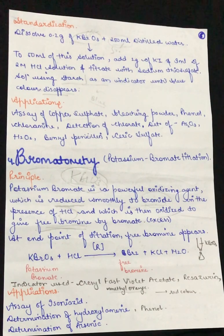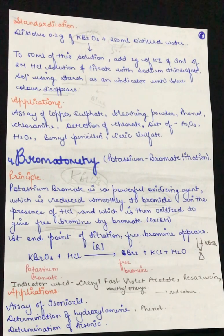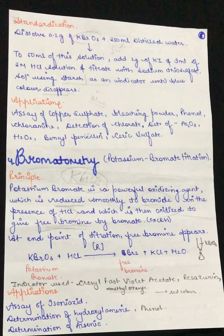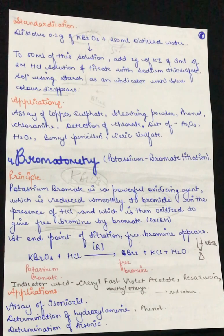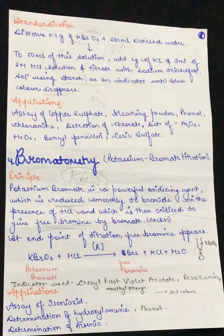To summarize the key points of bromometry: potassium bromate (KBrO3) is used as the initial reagent and is a very strong oxidizing agent. It is first reduced by a reducing agent to give bromide. In acidic medium (HCl), the bromide is then oxidized to give free bromine, which gives the endpoint. The indicators used are methyl orange, crystal fast violet, and resazurin, and the color at the endpoint is red.